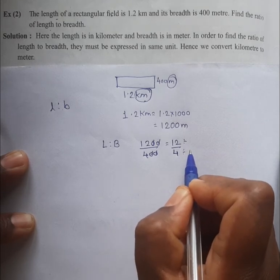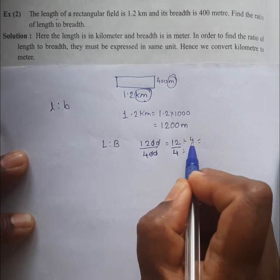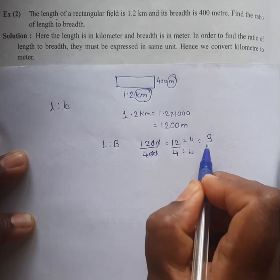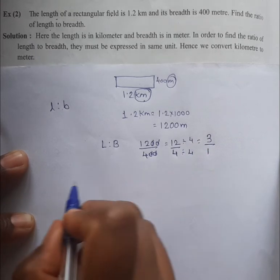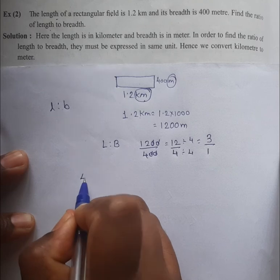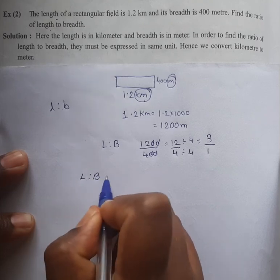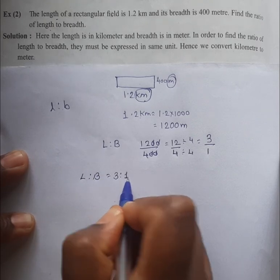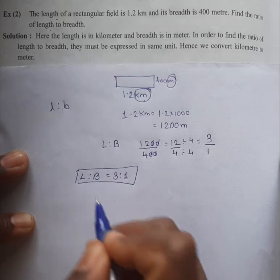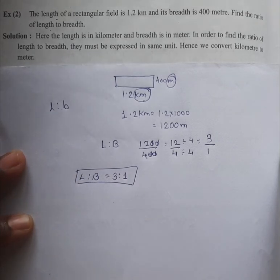4 threes are 12 and 4 ones are 4, so the answer is length to breadth is equal to 3 to 1. Answer is finished, thank you.